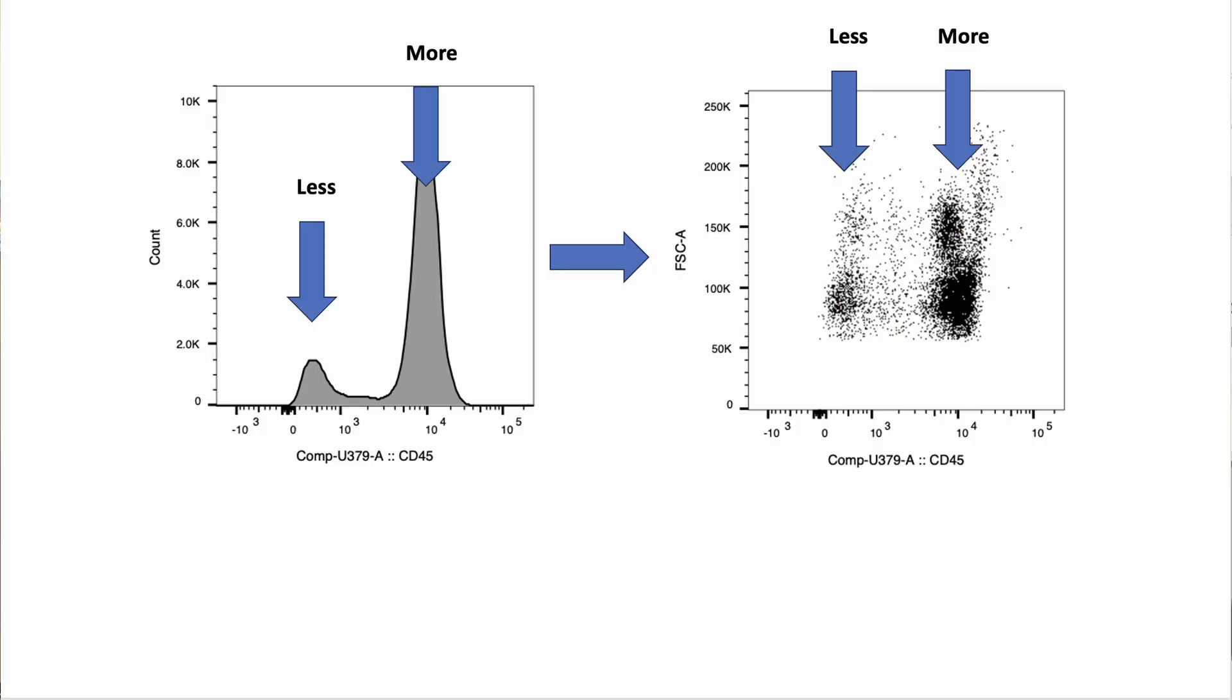More commonly, histograms you don't see very often anymore, you will see dot plots. So this is the exact same data moved from a histogram to a dot plot. In this case, just with forward scatter on the axis for simplicity to start with.